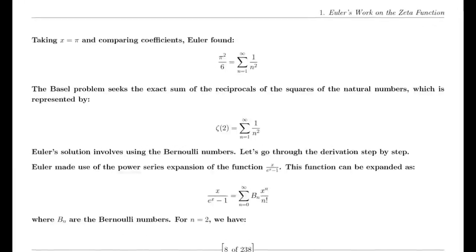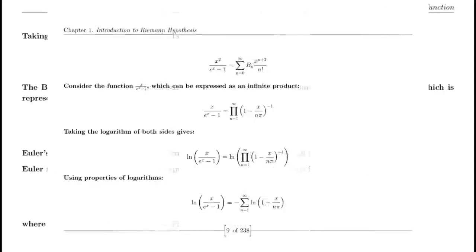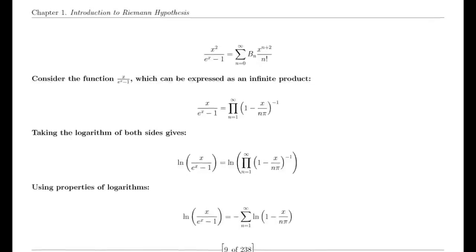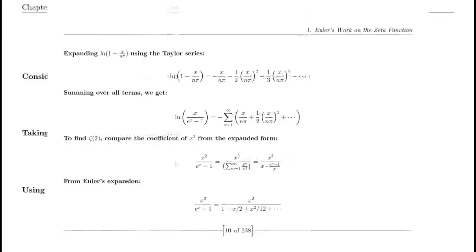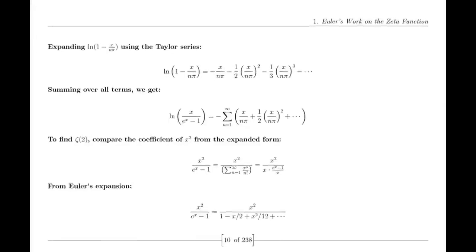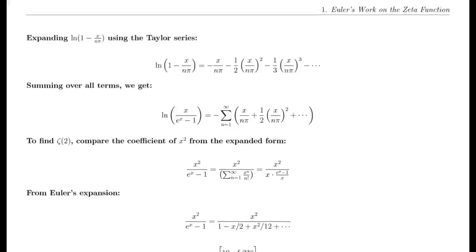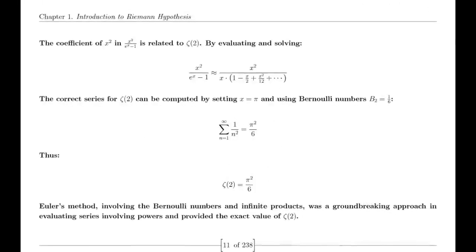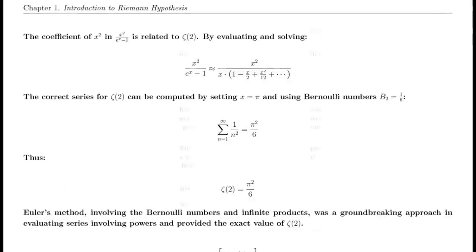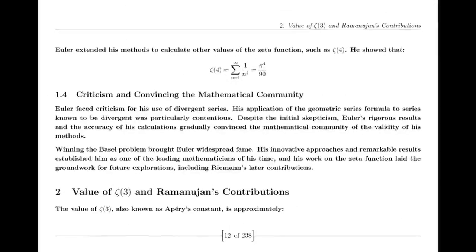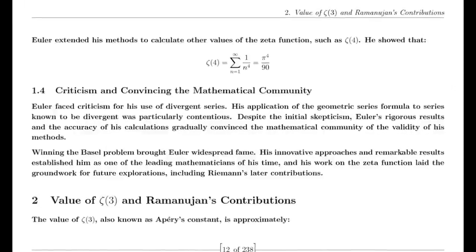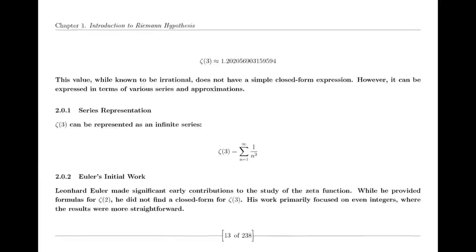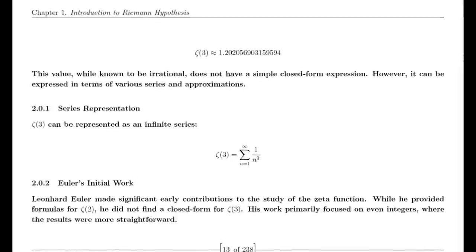Functional Equation and Riemann's 1859 Paper. The functional equation of the zeta function relates its values at s and 1 minus s through a complex expression involving π, the Gamma function, and trigonometric functions, showcasing its symmetry. In 1859, Riemann published his seminal paper on the distribution of prime numbers, which introduced the zeta function and laid the groundwork for modern analytic number theory. This paper was a milestone in mathematical history with a lasting impact on the field.